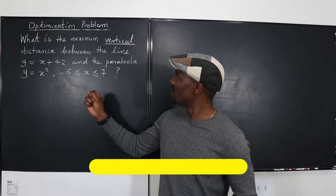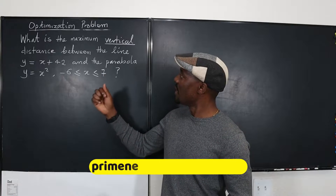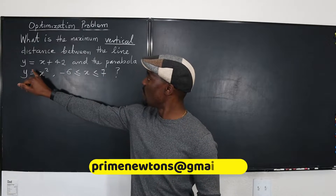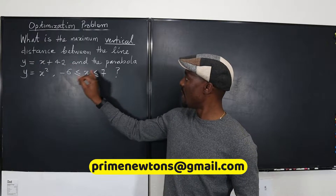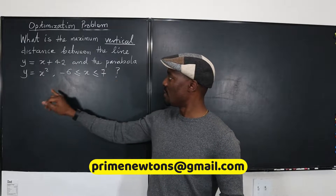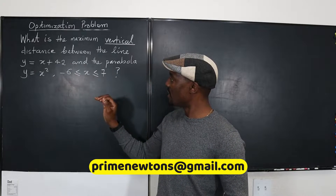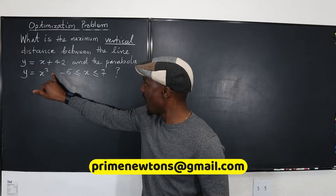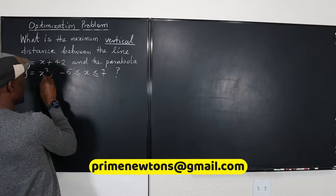This problem asks: what is the maximum vertical distance between the line y equals x plus 42 and the parabola y equals x squared? And we're given an interval here.